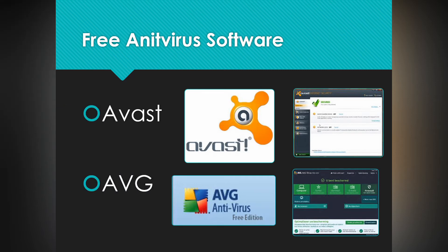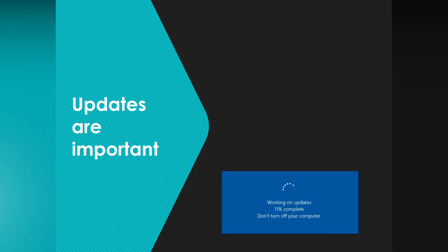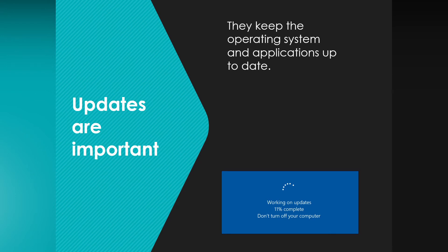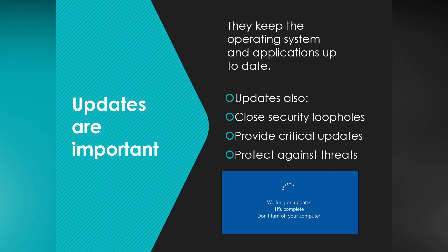Avast is one I've used — it's really good and you can see its interface right there. AVG Antivirus Free Edition is also good, and AVG will try to get you to upgrade to more secure features by paying. Updates to your computer are very important — whenever your computer wants to do Windows updates, keep your operating system and applications up to date. Updates also close security loopholes, provide critical updates, and protect against threats online.